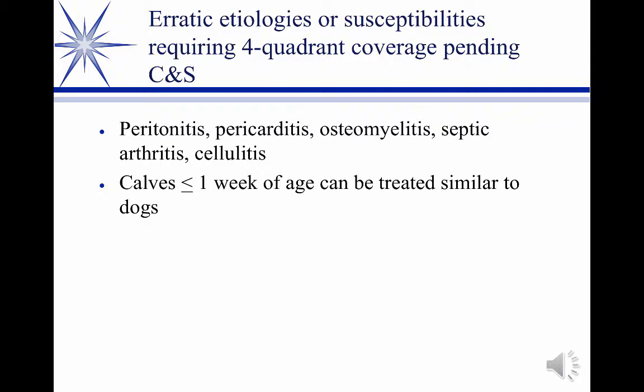Osteomyelitis is probably most commonly seen starting as a sole ulcer that progresses into osteomyelitis of the coffin bone or higher, though it can certainly occur anywhere else. Septic arthritis and cellulitis are also seen. Septic arthritis is probably most common in calves with umbilical infections where they've become septicemic from the umbilical infection.